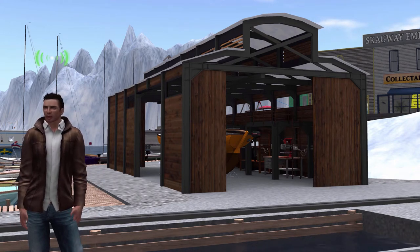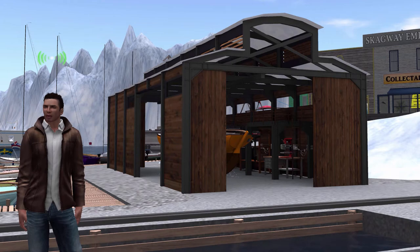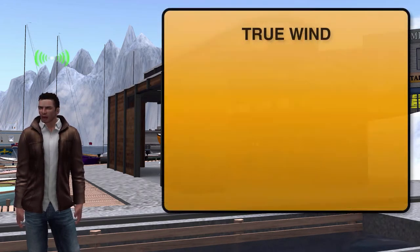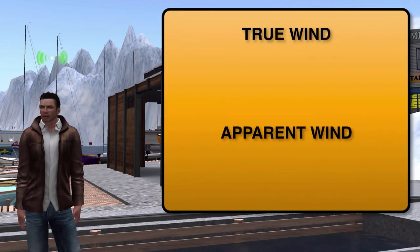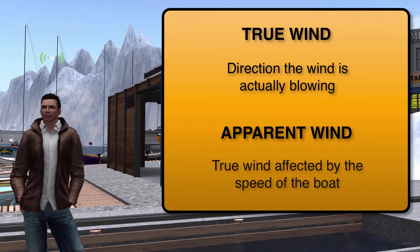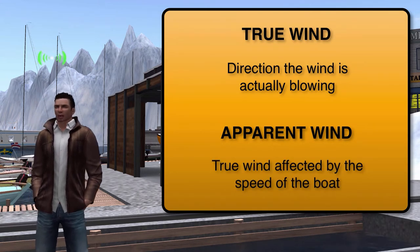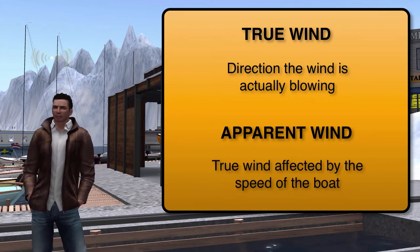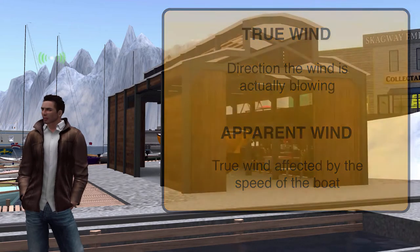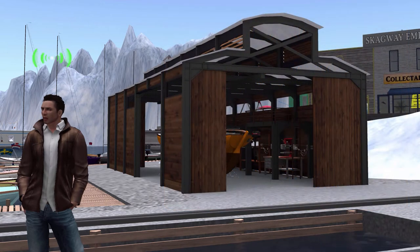There are two types of wind with which we deal on a sailboat: true wind and apparent wind. True wind is the direction and speed that the wind is actually blowing, and apparent wind is this true wind changed by the forward motion of the boat. We need to understand the difference because the sails actually use the apparent wind.